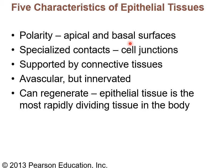There are also specialized contacts called cell junctions — tight junctions, desmosomes, and gap junctions — because epithelial tissue is all cellular and those cells must be connected. Epithelium is supported by connective tissue, which is a good point to remember. When looking at a histological section you can easily pick out the epithelium as the innermost or outermost layer, with connective tissue beneath it.